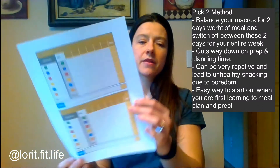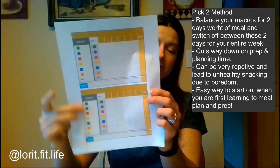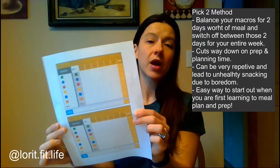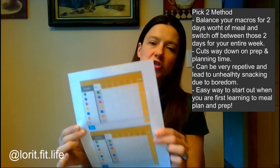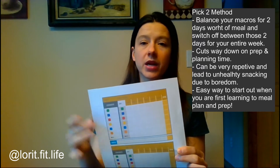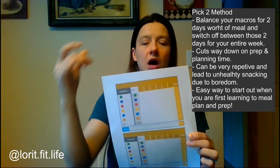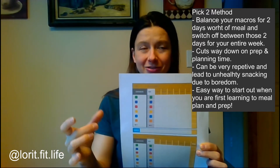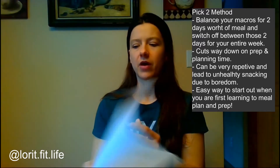Another way is what a lot of people call the pick two method. You plan two days and rotate through them every day of the week, so you're only actually planning two days instead of seven. One day covers Monday, Wednesday, Friday, and Sunday — they're having one breakfast. The other covers Tuesday, Thursday, and Saturday with a second breakfast, and so on and so forth throughout the week.